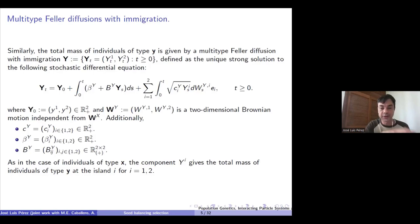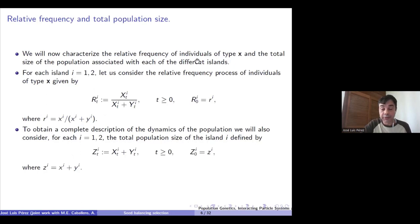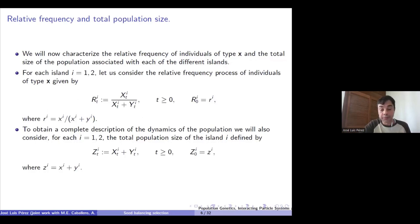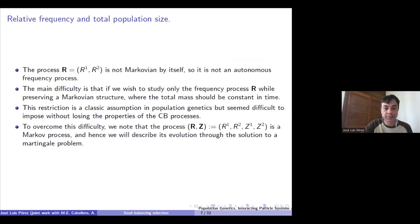These are the dynamics of each of the populations of each type and each island. What we want to do is study the frequency of one of the types in the population, so we construct the frequency process. We describe the relative frequency of type x individuals in the population at each island by r_i(t) = x_i(t) / (x_i(t) + y_i(t)), and we also consider the process c_i(t), which gives the total size of the population at island i — the sum of type x and type y individuals located at island i.